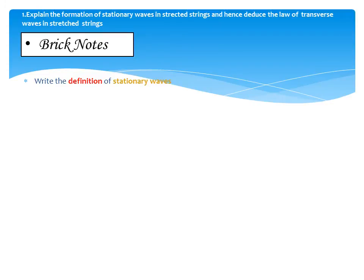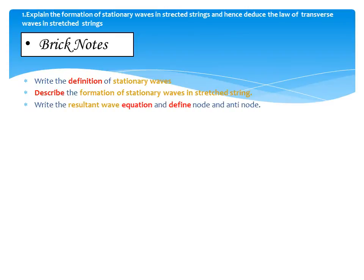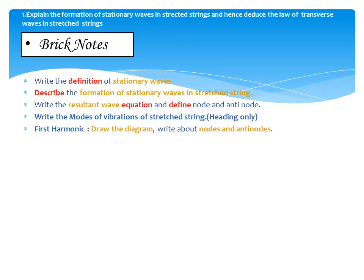First: write the definition of stationary waves. Describe the formation of stationary waves in stretched strings, write the resultant wave equation, and define nodes and antinodes. Write the modes of vibration of stretched strings. First harmonic — draw the diagram, write about nodes and antinodes, write the length and wave equations of first harmonic.